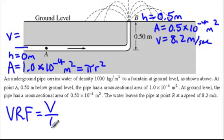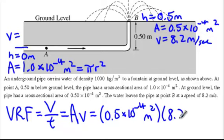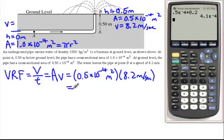The volume rate of flow is the volume divided by the time. It's also equal to A1 times V1. They didn't give me my volume or my time, but they did give me area and velocity at point B. My area is 0.5 times 10 to the negative fourth meters squared, and the velocity is 8.2 meters per second. Taking 0.5 times 10 to the negative 4 multiplied by 8.2, we get a volume rate of flow of 4.1 times 10 to the negative fourth meters cubed per second.